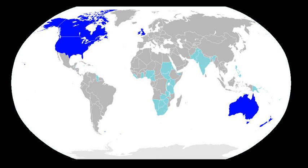Both standard and non-standard varieties of English can include both formal and informal styles, distinguished by word choice and syntax. The settlement history of the English-speaking inner-circle countries outside Britain helped level dialect distinctions and produce coinized forms of English in South Africa, Australia, and New Zealand. The majority of immigrants to the United States without British ancestry rapidly adopted English after arrival. Now the majority of the United States population are monolingual English speakers, although English has been given official status by only thirty of the fifty state governments.